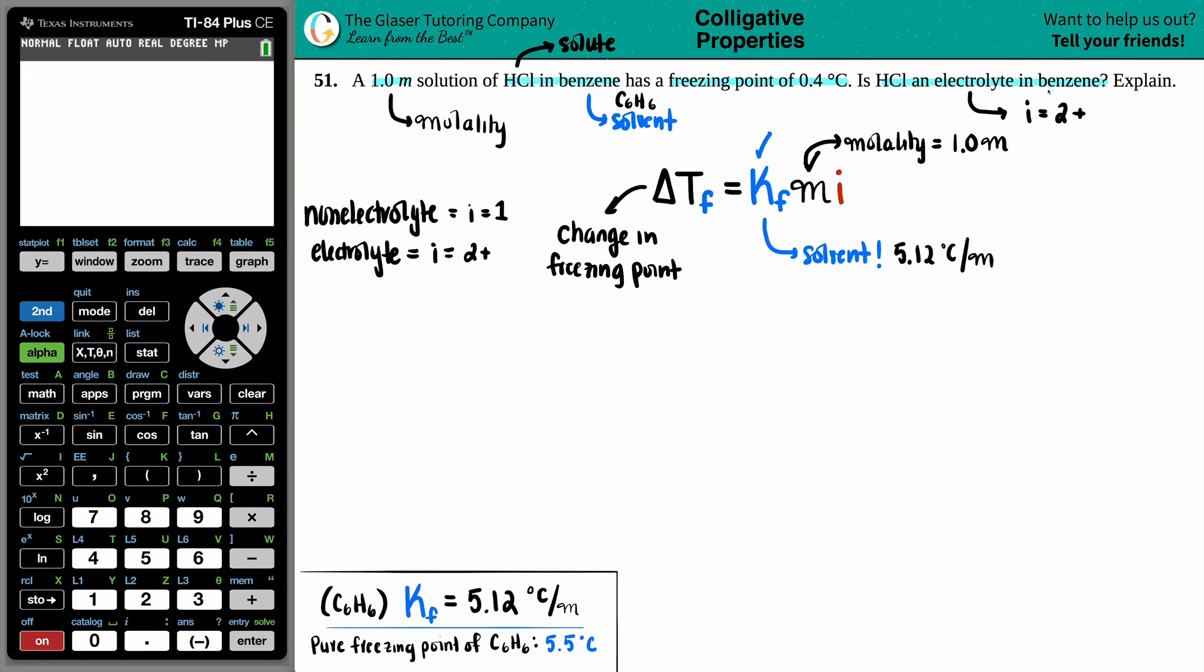An electrolyte will have an i-value of 2 or more. So 2, 3, 4 - it really depends on the amount of ions. If you have 2 ions and your compound breaks into 2, that would be an i of 2. But if you have 3 ions, you'll have an i of 3, 4, etc.